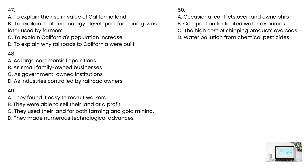Number 47: Why does the professor mention the California gold rush? Number 48: How does the professor characterize California's early farms? Number 49: What does the professor emphasize about California's farmers? Number 50: What disadvantage of farming in California does the professor mention? This is the end of the listening section.